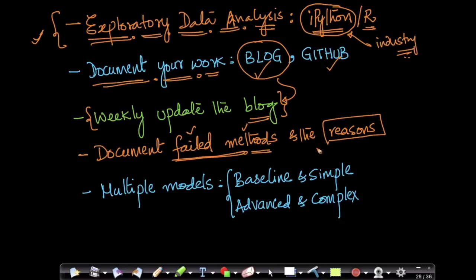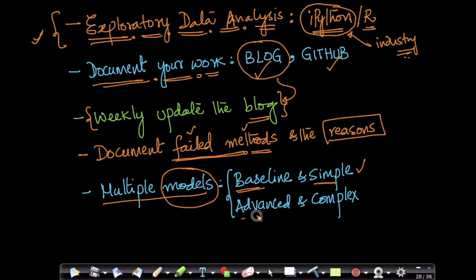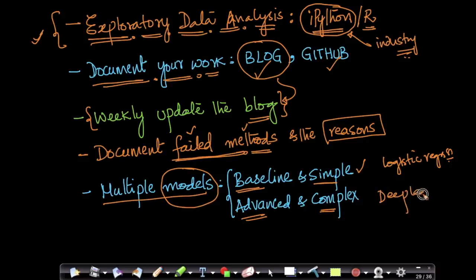Write about failed methods and why they failed — it's important to understand why a technique did not work, as that sharpens your understanding. When applying machine learning models — classification, regression, or clustering — always try the simplest baseline models first. Slowly and incrementally improve to more advanced algorithms. Don't jump straight to deep learning; try simple ones like logistic regression first.